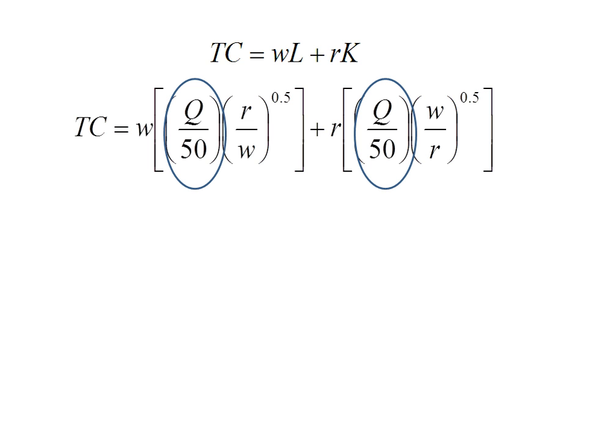There's a Q over 50 in both of these terms, so I can pull that out to the front. These exponents here, that's really R to the 0.5 over W to the 0.5, and then in the second term it's W to the 0.5 over R to the 0.5.